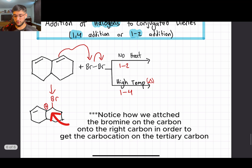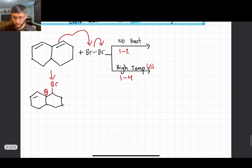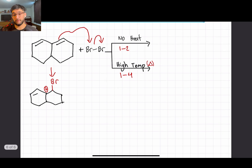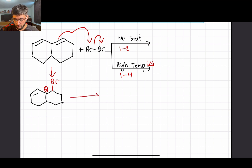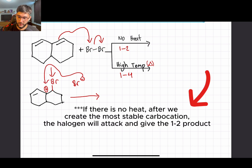When our reaction does not contain any heat, think of heat as a fuel source — something that allows us to push the reaction further. With no heat, we have no fuel, so the major product is going to be the one formed the fastest, in the least amount of steps. When there is no heat, after we form the most stable carbocation, the Br⁻ created in the first step is just going to come in and attack the carbocation, and this will be our end product.